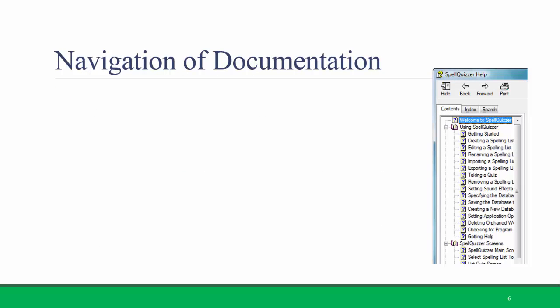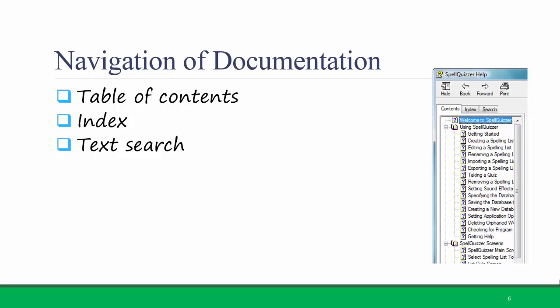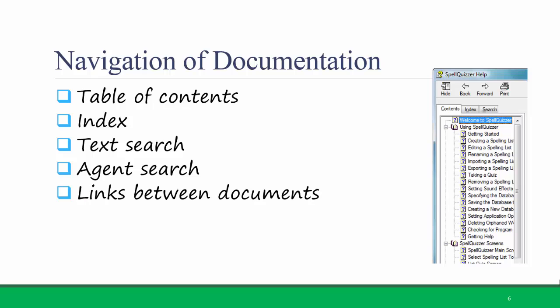Navigation of the user documentation is just as important as navigation of the user interface. There are several different navigation tools you can use in your help documentation. One example is a table of contents. Another is an index, like the index at the back of a book. Another is a text search, to be able to search for keywords and terms. And another is an agent search — when the documentation allows you to ask a question and tries to interpret your question and give you a correct answer. The fifth navigation tool is links between documents.